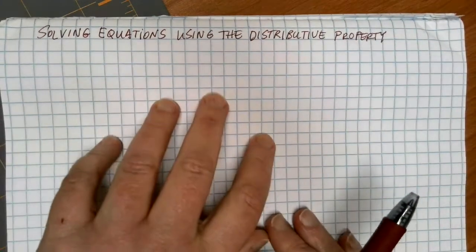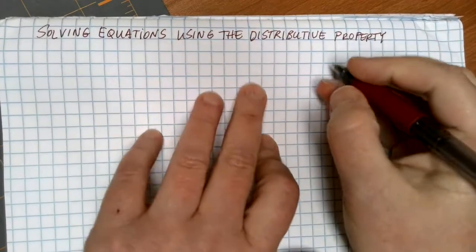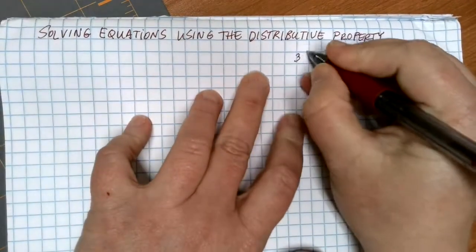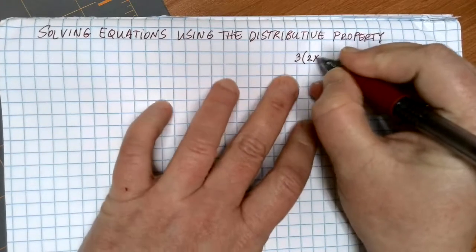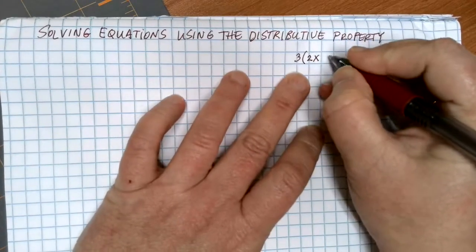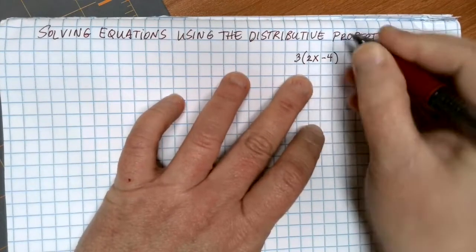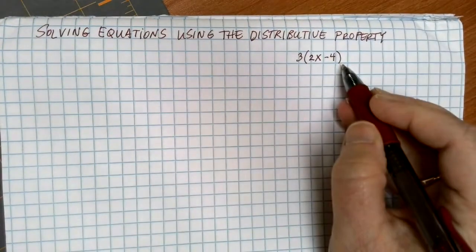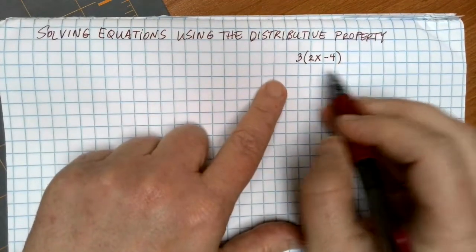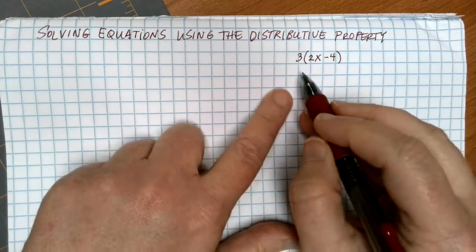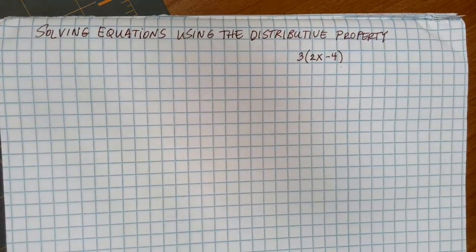One complication that we frequently see in equations are parentheses. Let's take a look at an expression that has some parentheses in it. Let's suppose that I have 3 being multiplied by 2x minus 4, so I'm multiplying 3 by the difference, and what I'm left with is this expression. Notice this is not an equation — I'm not trying to get x alone or anything here. I just want to think about what this means and what values it takes on.